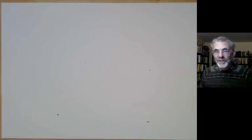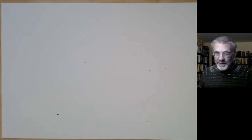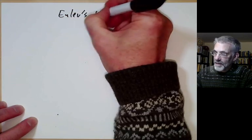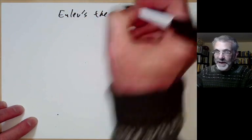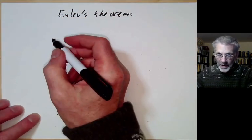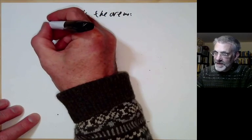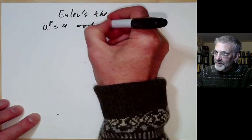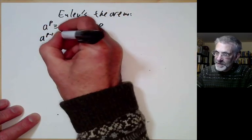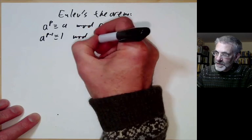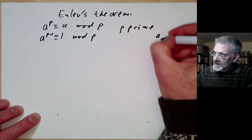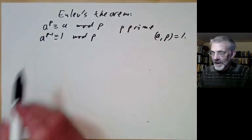This lecture is part of Berkeley Math 115, an introductory undergraduate lecture on number theory, and it will be mostly about Euler's theorem, which is a generalisation of Fermat's theorem. We quickly recall Fermat's theorem has two forms: either a to the p is congruent to a modulo p, or a to the p minus one is congruent to one modulo p, where p is prime and in the second case p must be co-prime to a.